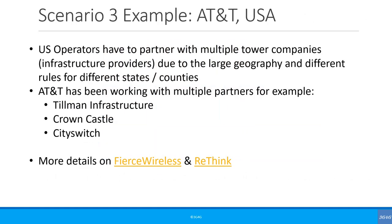US operators are good examples of scenario three. In addition to having parts of infrastructure themselves, they also have to partner with multiple tower companies due to the large geography and different rules for different states and counties. AT&T, for example, has been working with multiple partners for tower leases and infrastructure deployment. Some names include Tillman Infrastructure, Crown Castle and CitySwitch.